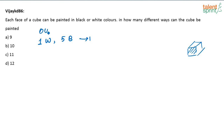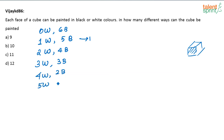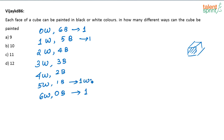Let me write down all the possibilities of painting the cube. The first possibility is all six sides black. The second is one white and five black. The third is two white and four black. Then three white and three black, four white and two black, five white and one black, and six white and zero black. Now, six white zero black can be done in one way, and zero white six black also in one way. One white five black is one way, and five white one black is also one way.